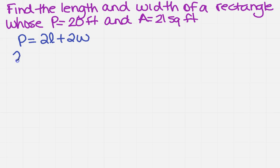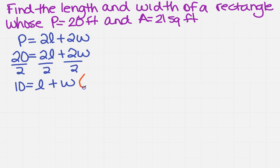It tells me that the perimeter is 20, so I can plug that in. I've got 20 equals two times the length plus two times the width. I notice everything's got a two in common, so I can divide everything by two. I'm going to get 10 equals the length plus the width. I'm going to call this equation one.